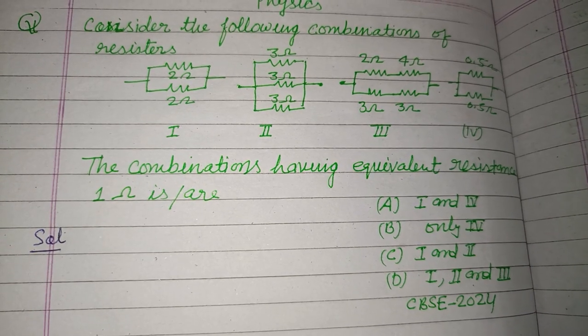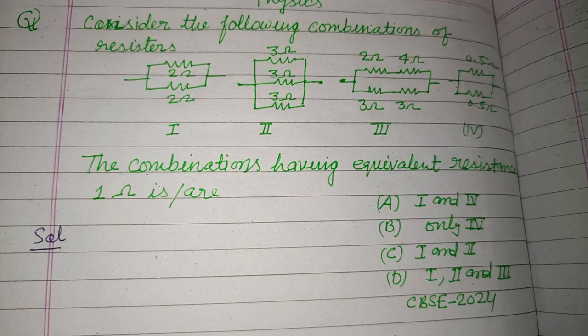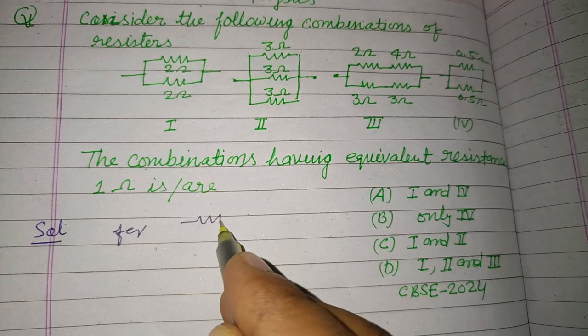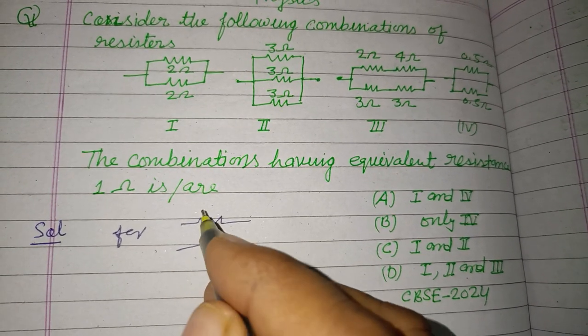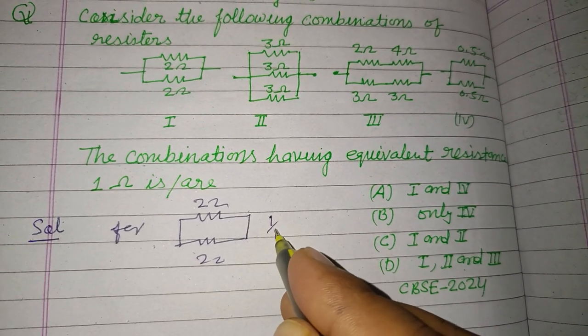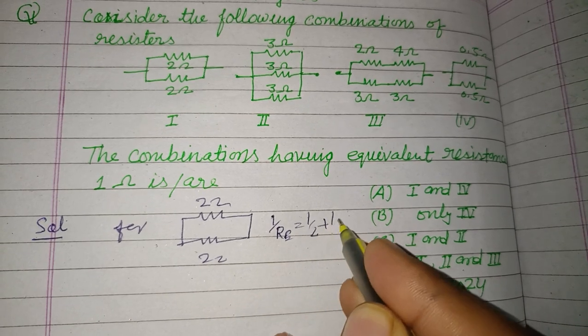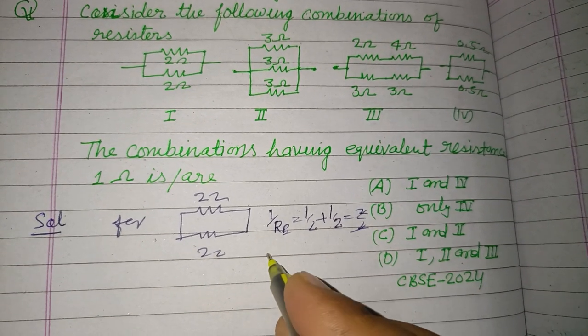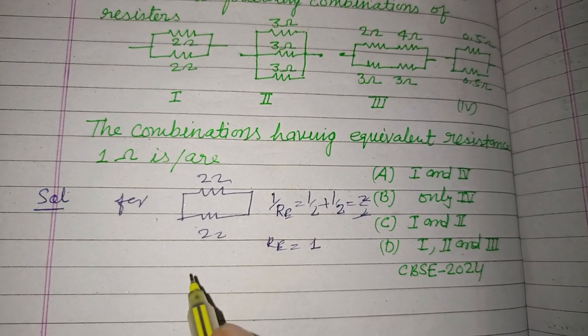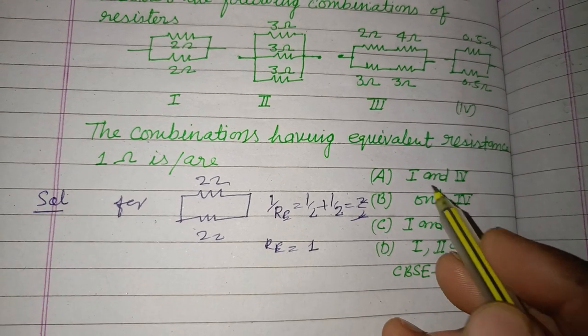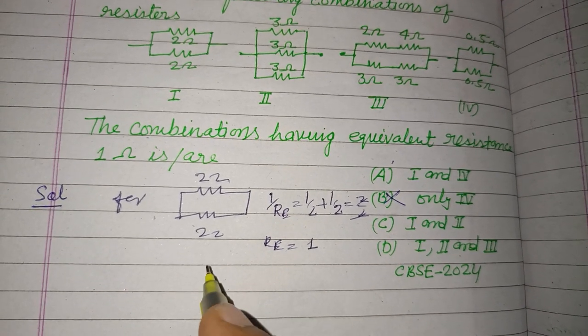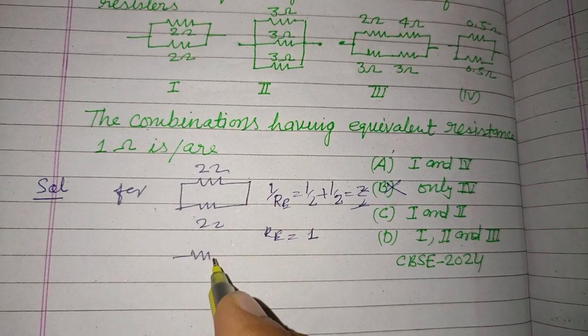So for first, here are two 2-omega resistors in parallel combination. So equivalent resistance equals 1/2 plus 1/2, this is 2/2, so this equals 1. So I is correct. So this option is wrong, B is wrong.